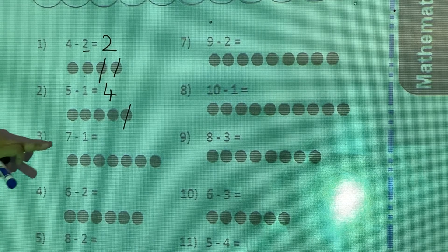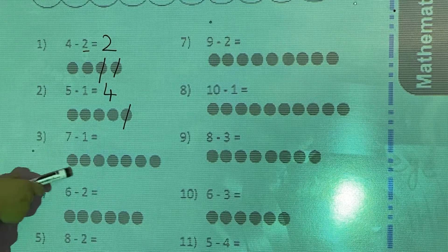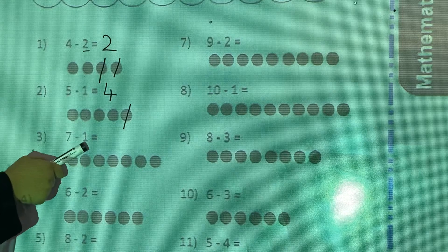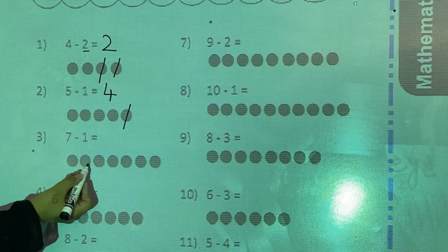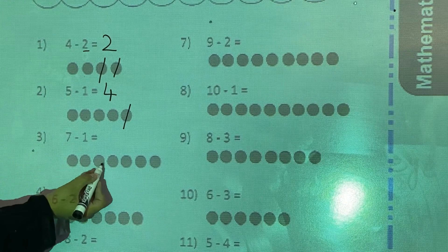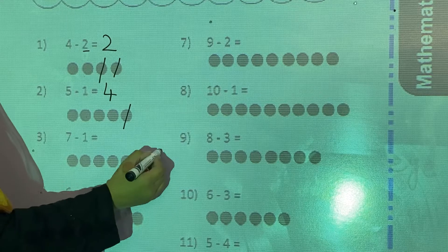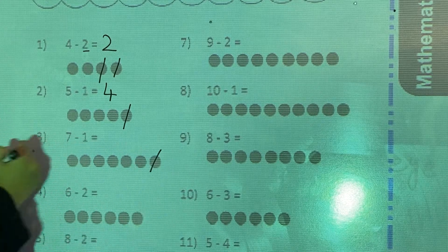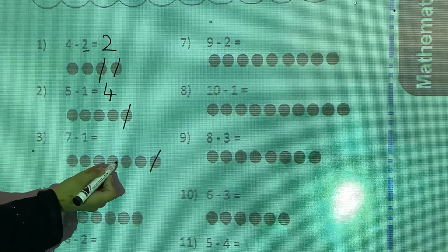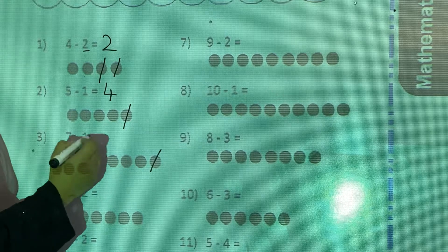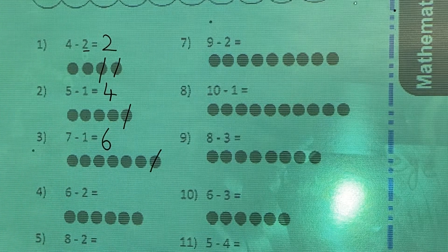Now the third one: 7 minus 1. Total are 7 — you have to cut 1 from it. Count: 1, 2, 3, 4, 5, 6, 7. How many are left? 1, 2, 3, 4, 5, 6. So 7 minus 1 is equal to 6.